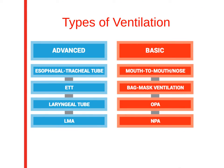Here are the types of ventilation, which are divided into advanced and basic types. The airways listed on the right column are considered basic, while those on the left are considered advanced. Oropharyngeal and nasopharyngeal airways are considered basic, but require proper placement by an experienced caregiver.